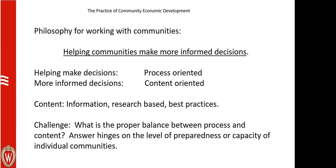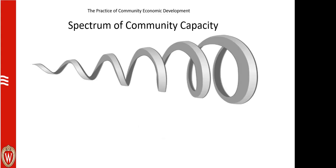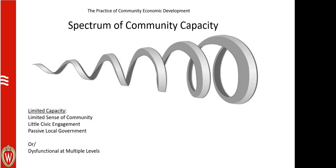The answer to the process-versus-content question really hinges on the preparedness or capacity of the individual communities you're working in. Community economic development is not a linear process — it's a circular, cumulative causation type of process. Communities on the lower end of the spectrum have limited capacity, a limited sense of community. The old joke is the only thing that ties the community together is they share a common zip code. There's very little civic engagement and a passive local government.